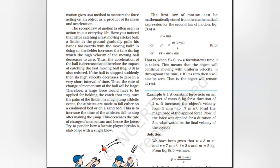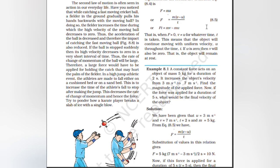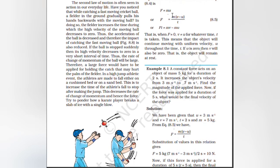Try to ponder how a karate player breaks a slab of ice with a single blow. The first law of motion can be mathematically stated from the second law: F = ma, so F = m(v − u)/t, giving Ft = mv − mu. When F = 0, v = u for whatever time it is taken — meaning the object will continue moving with uniform velocity u throughout the time t. If u is zero then v will also be zero — that is, the object will remain at rest.